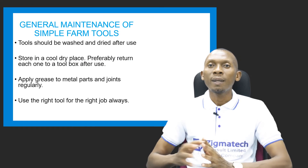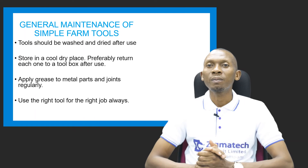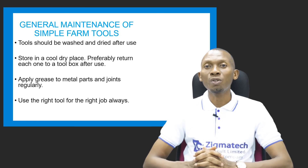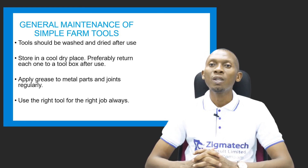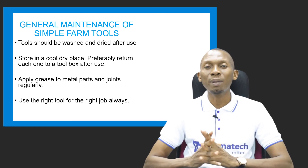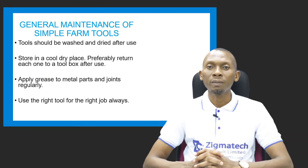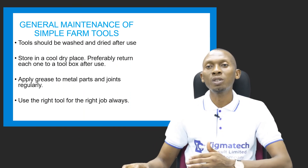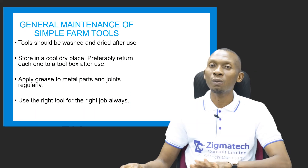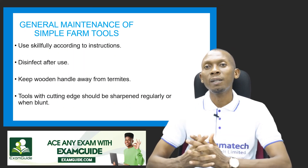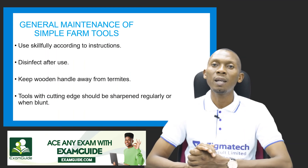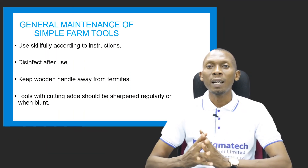Now let's look at the general maintenance of simple farm tools. These tools should be washed and dried after use. They should also be stored in a cool, dry place, and preferably returned to a toolbox. Those that have metal parts or joints should have oil applied to the metal parts. Always use the right tool for the right job — don't use a tool for a purpose it is not meant for. Use tools skillfully according to instructions, and disinfect them after use.